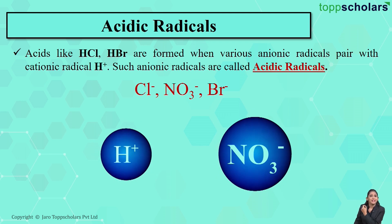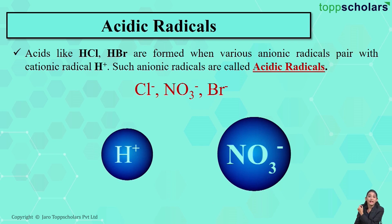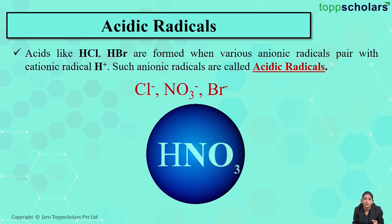Let's take the next example: NO3⁻. Again, it is an anion — a negatively charged ion. This NO3⁻ combines with the H⁺ radical, that is the cationic radical, and what does it form? HNO3 — nitric acid. Again we get an acid.